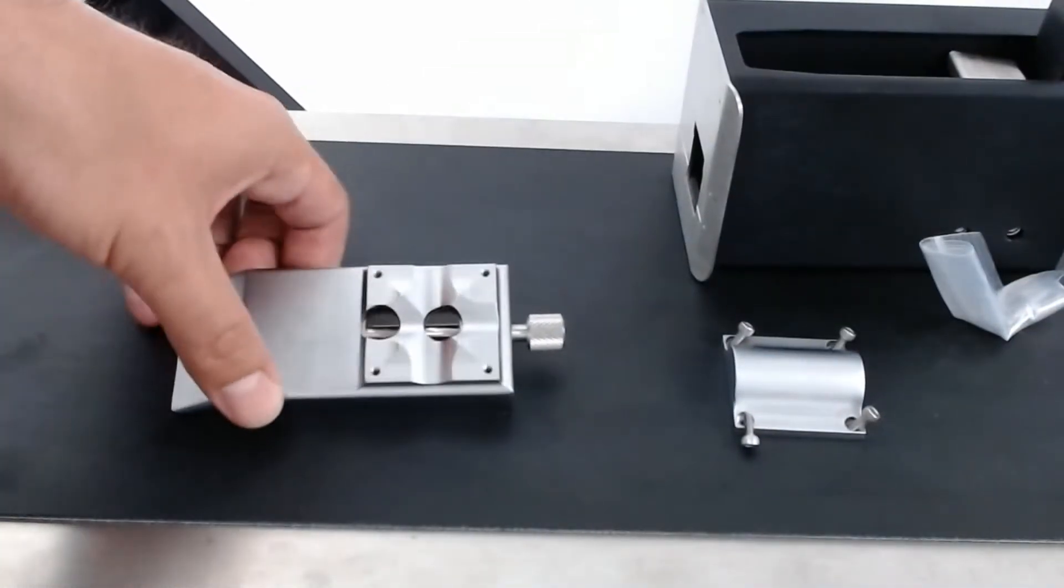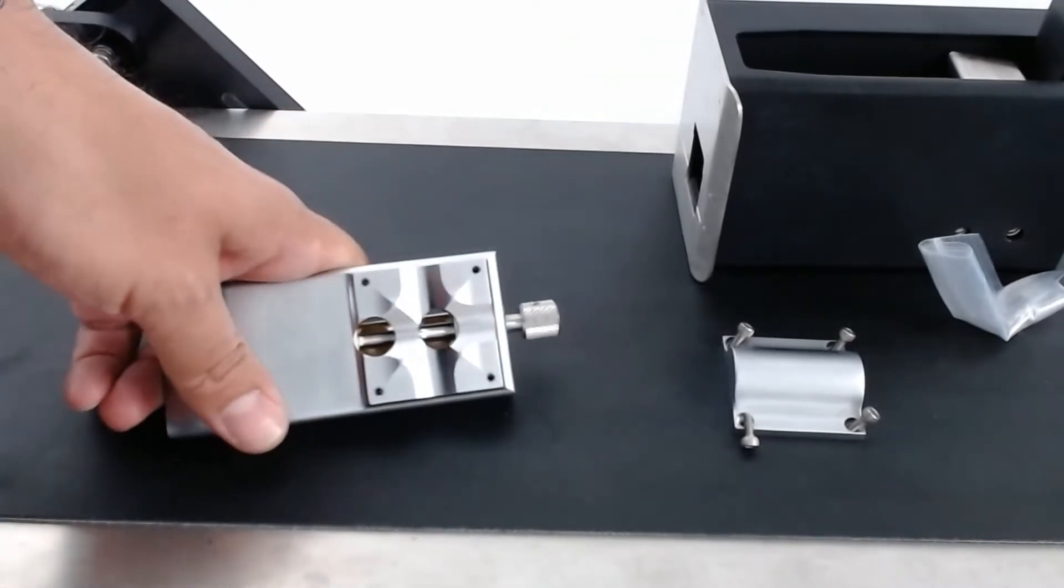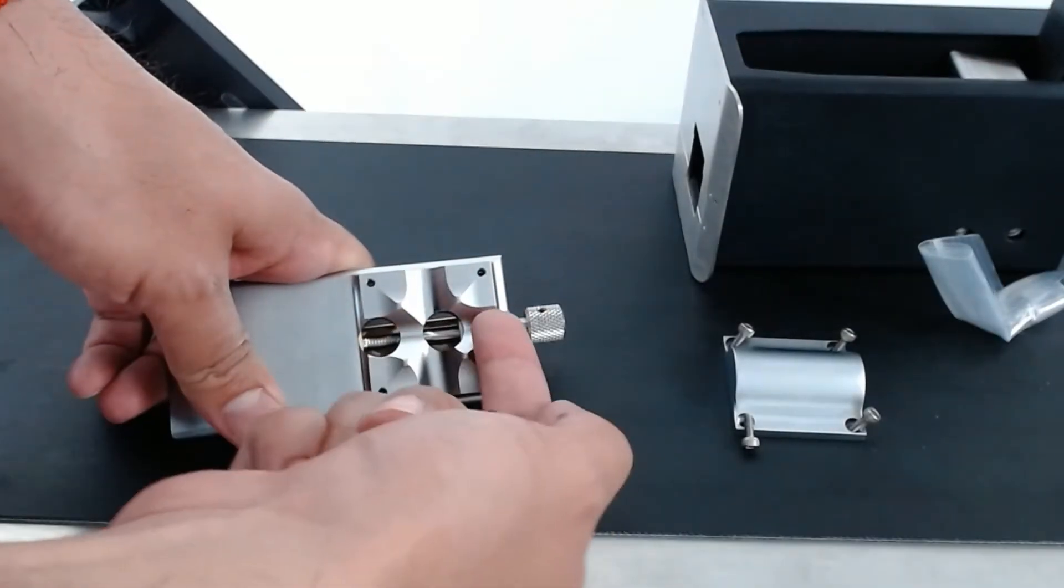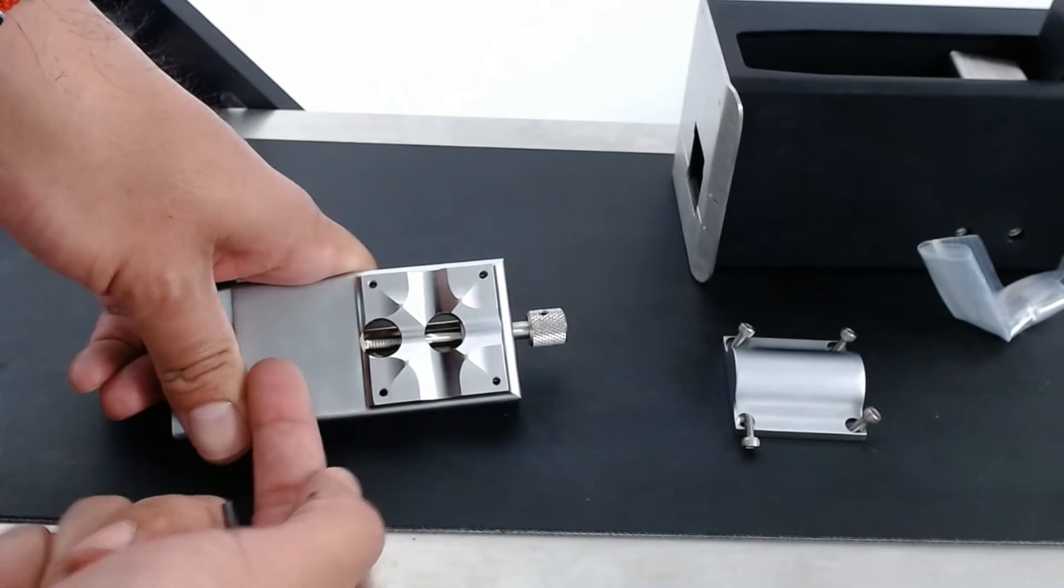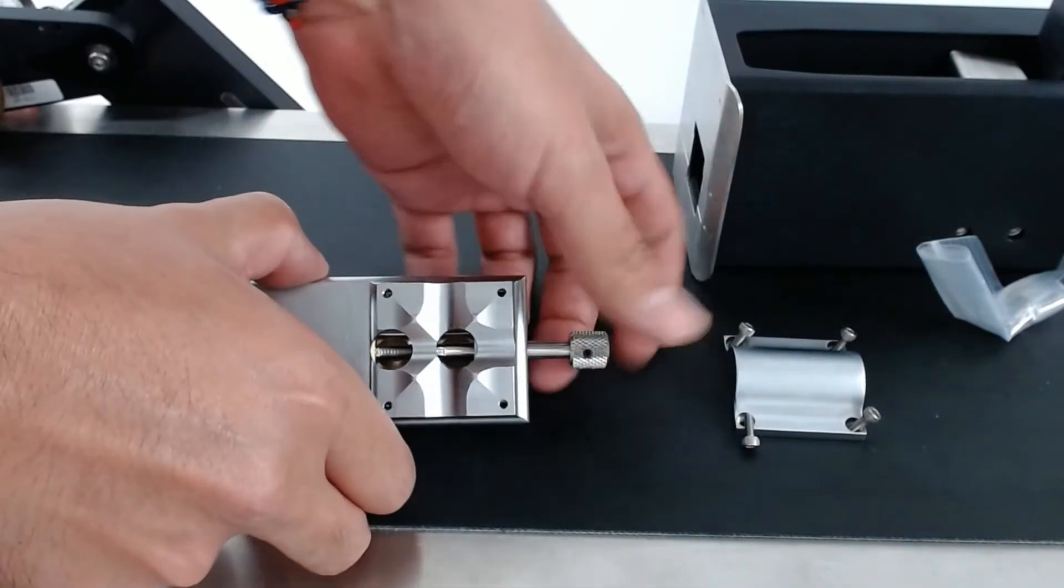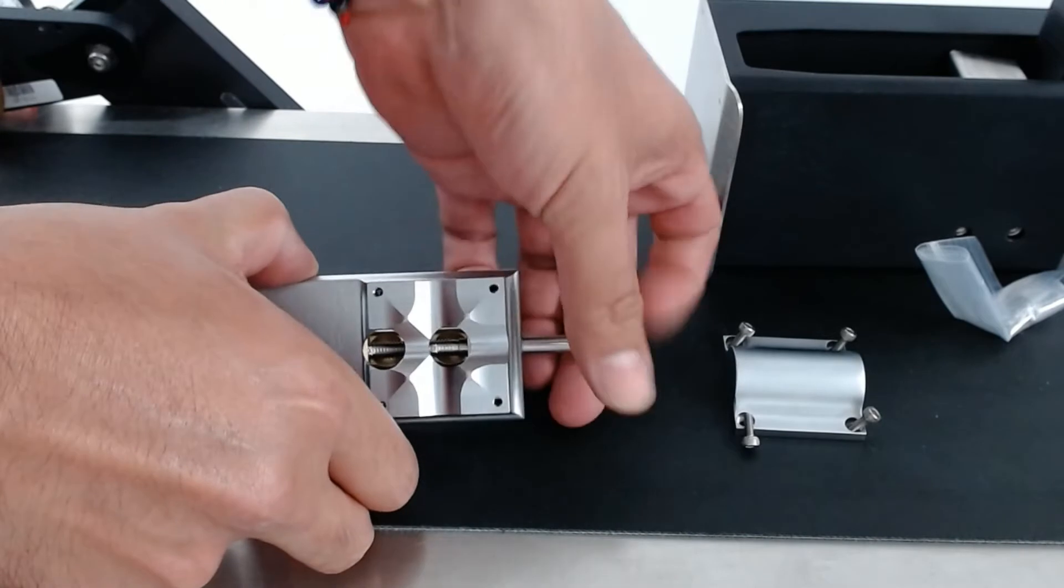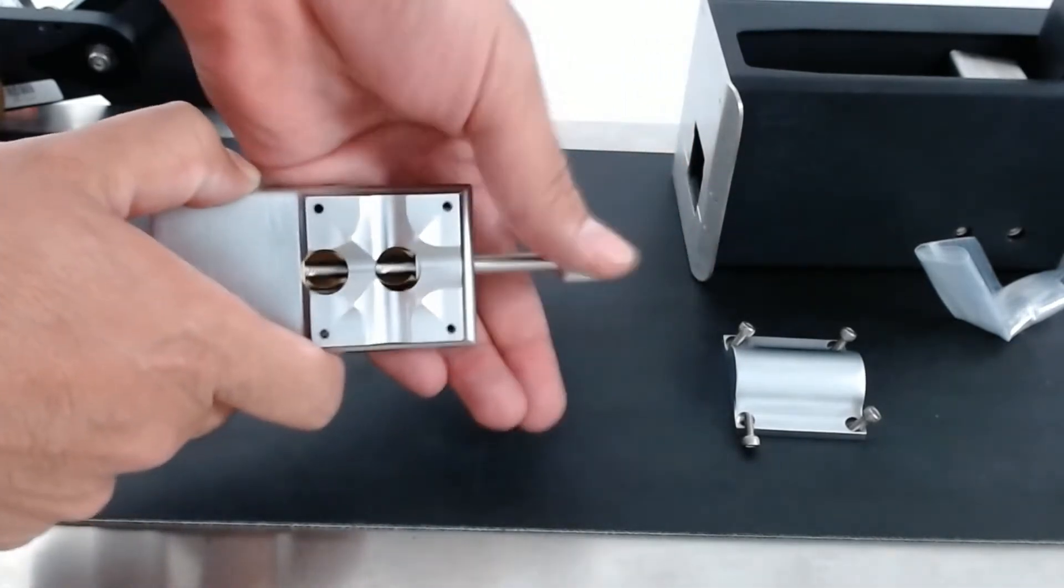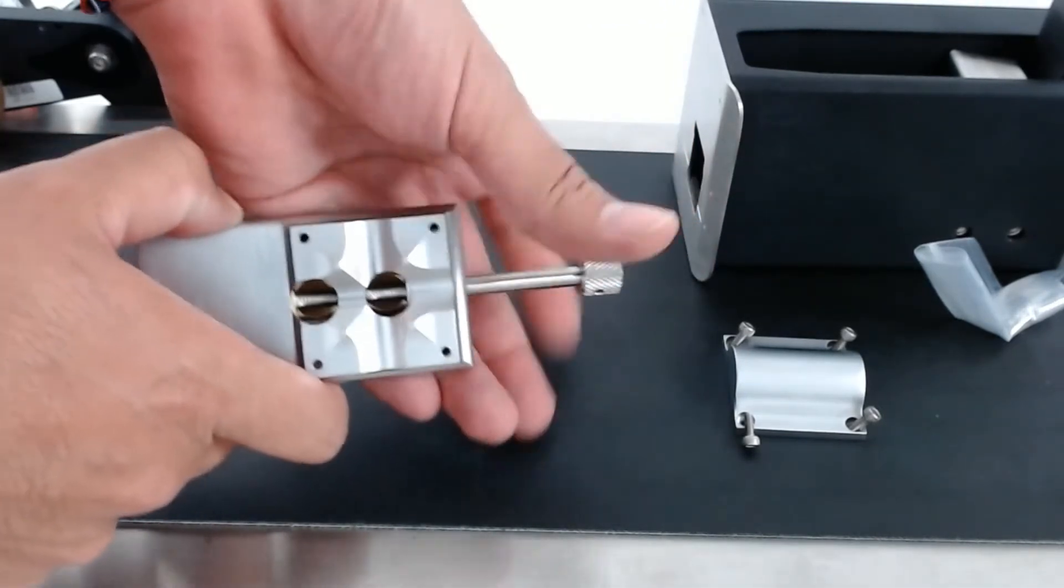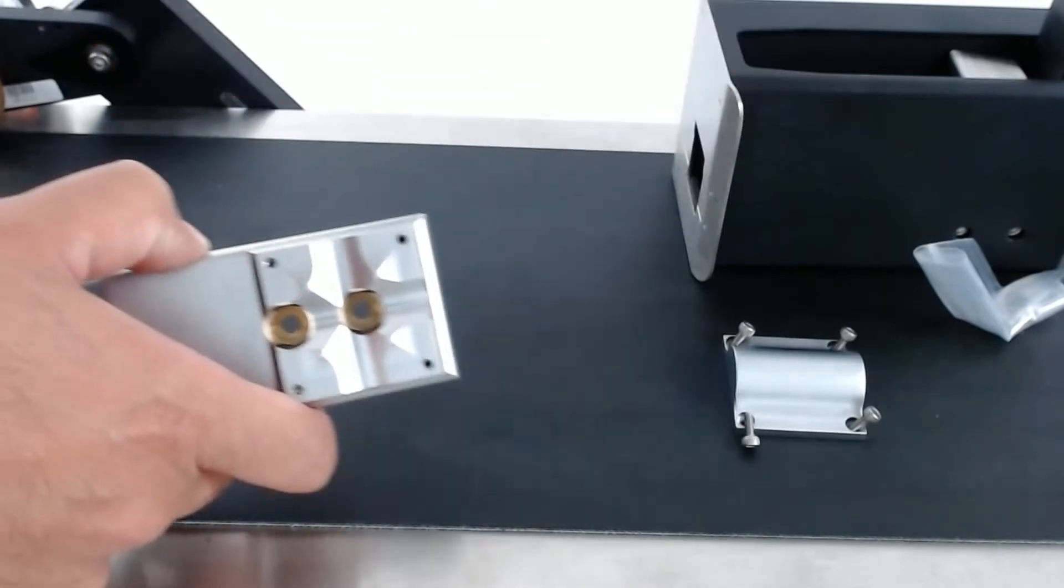So when you get that removed, if you look down in here, you'll see that this thumb screw, the shaft travels all the way through here. So we're going to go ahead and remove that thumb screw.